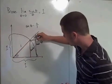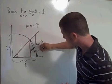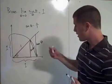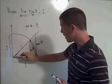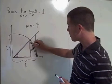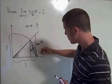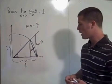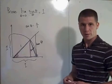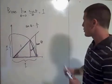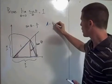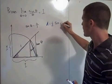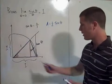We'll draw one more line segment, making a different triangle that I'll outline in blue. Let's find the area of the blue triangle. The area of a triangle is one half base times height. So the area of the blue triangle is one half times the base, which is 1, times the height, which is sine theta. So it's one half times the sine of theta. That's the area of the blue triangle.